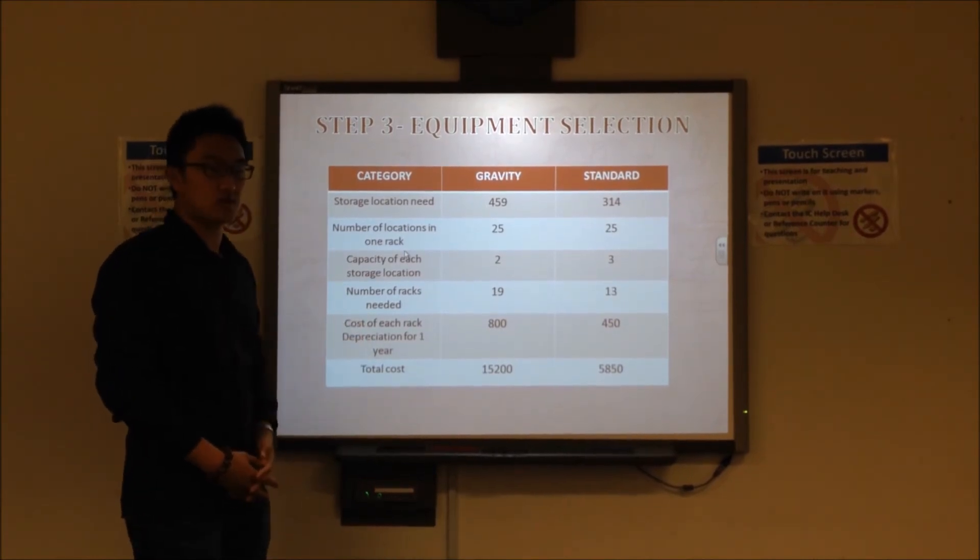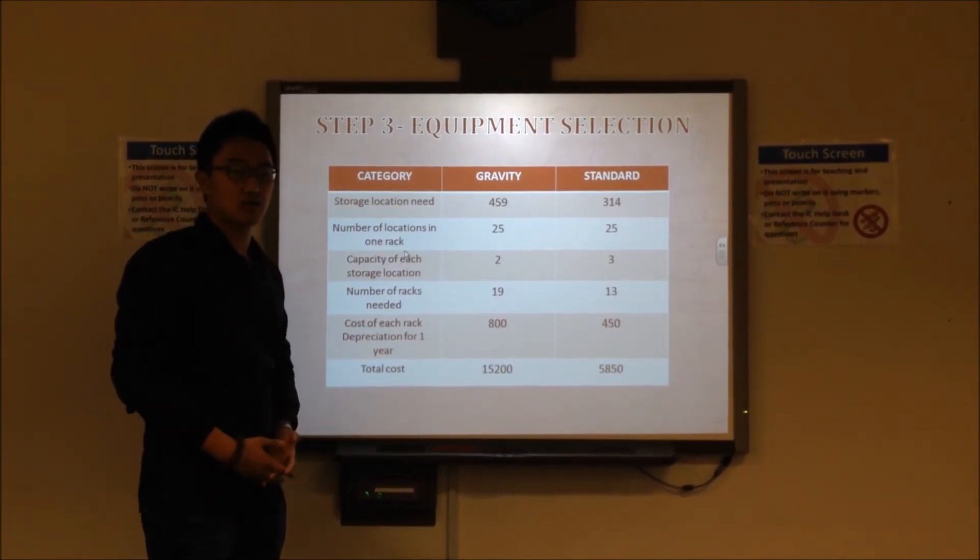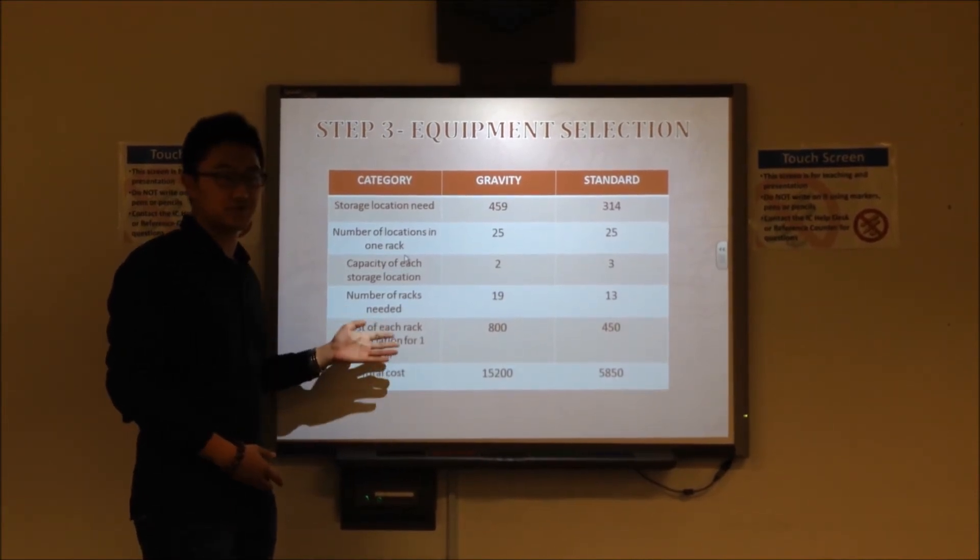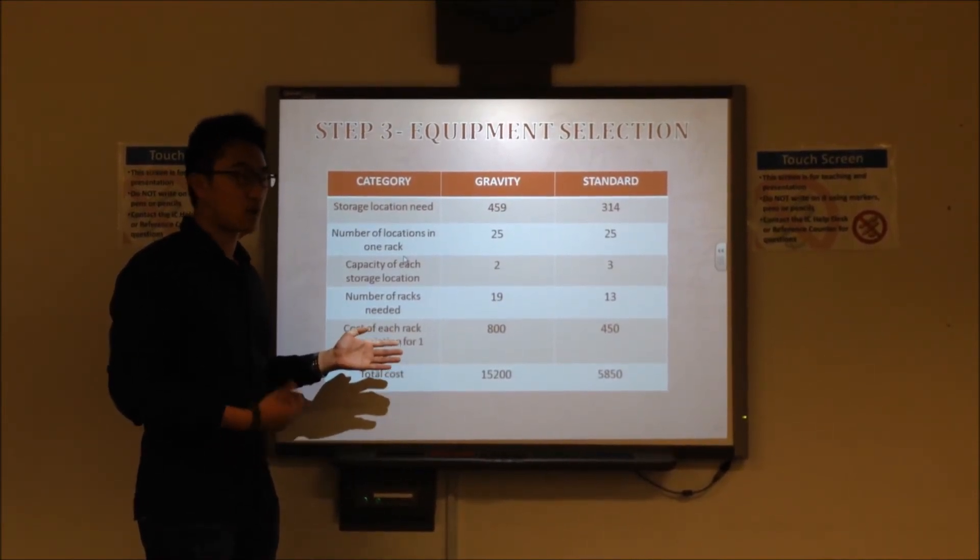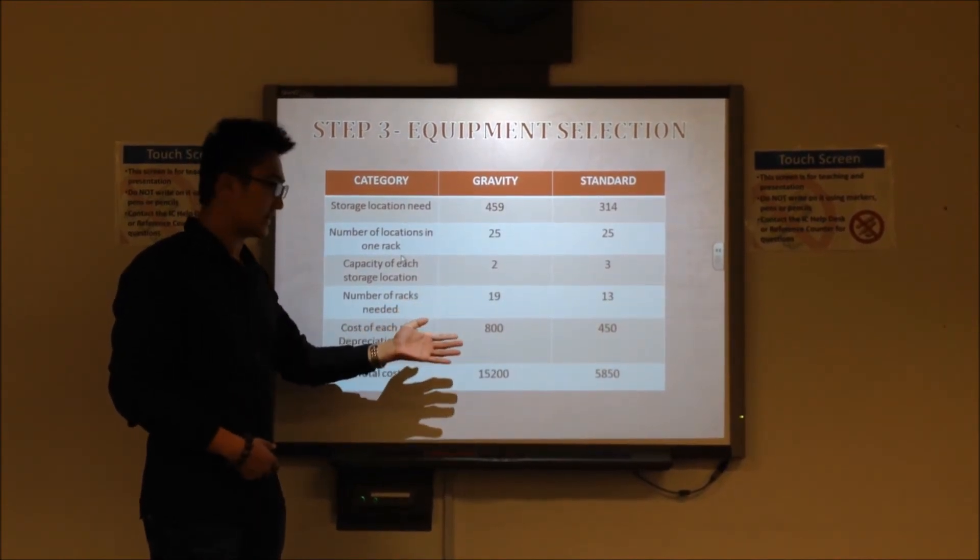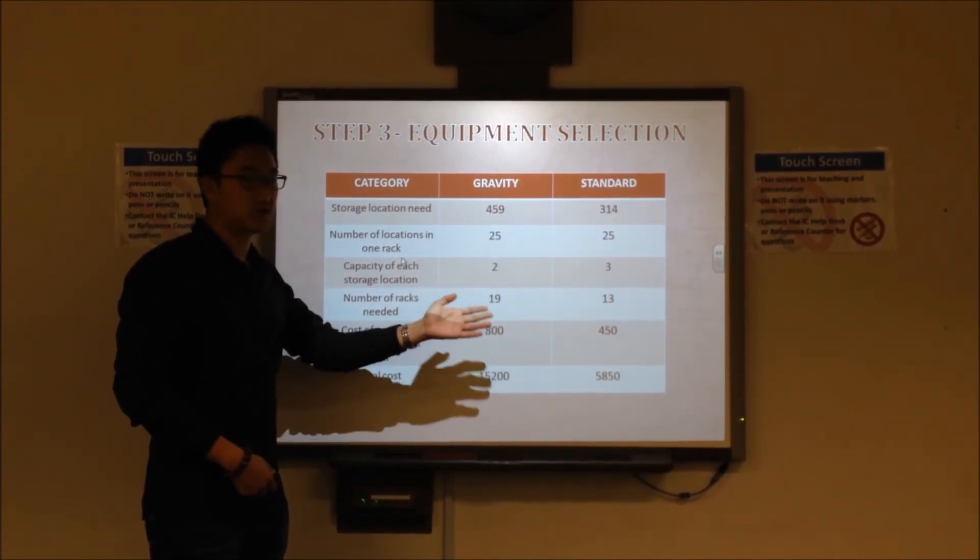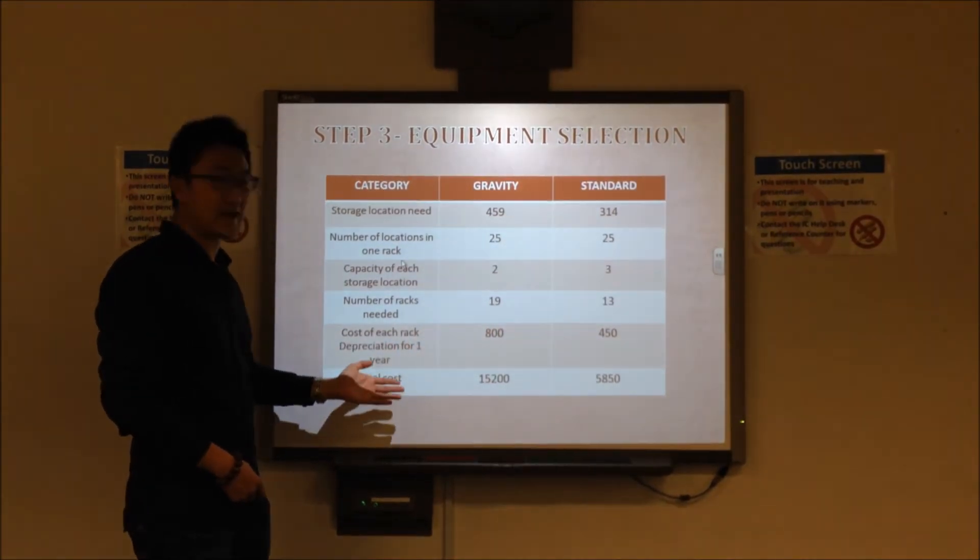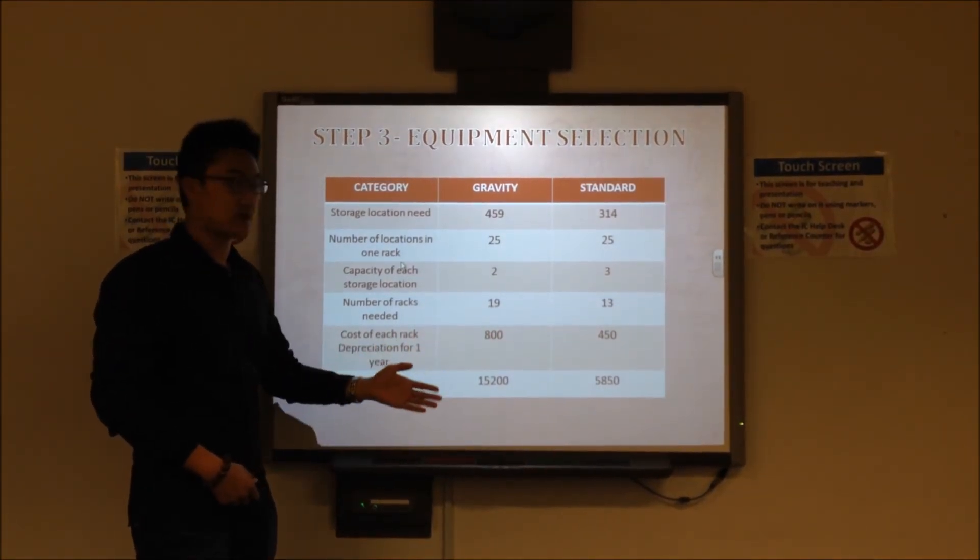Let's see the cost. If we buy one rack, we can use it for 5 years. We use the depreciation for one year as our annual cost. The cost we need to pay for gravity rack is 800, and the standard rack is 450. Then we get the total cost for these two racks.